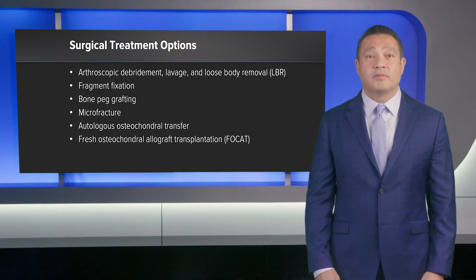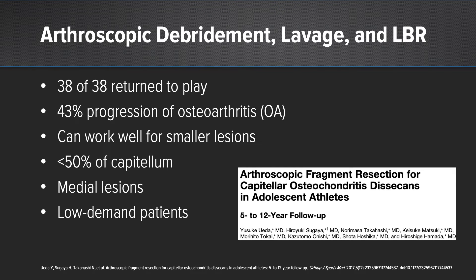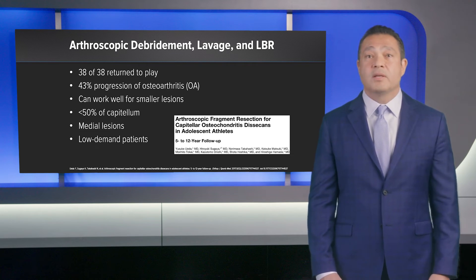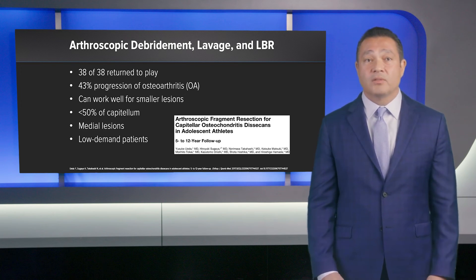Various surgical treatment options are available, including arthroscopic debridement with lavage and loose body removal, fragment fixation, bone peg grafting, microfracture, autologous osteochondral transfer, and fresh osteochondral allograft transplantation. In one study of 38 patients who underwent arthroscopic debridement, lavage, and loose body removal, all 38 were able to return to play. However, at midterm follow-up, 43% had progression to osteoarthritis. Debridement and loose body removal may work for very small lesions — less than 50% of the capitellar width — medial lesions, or low-demand patients, but not for larger or more unstable lesions.